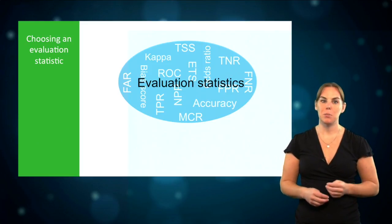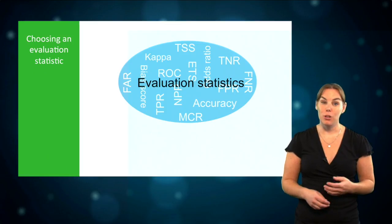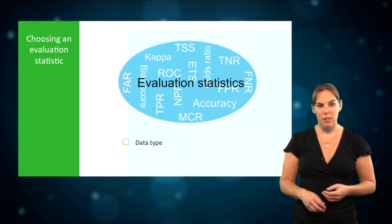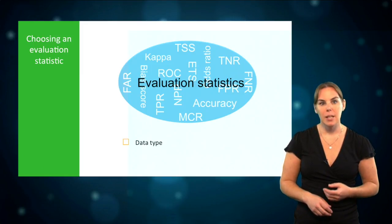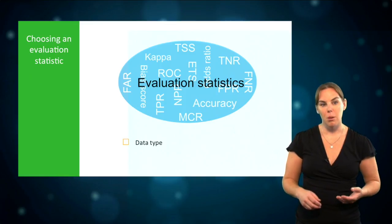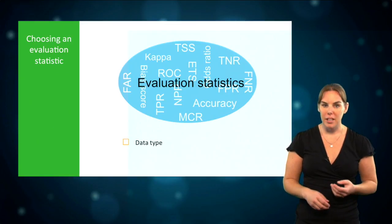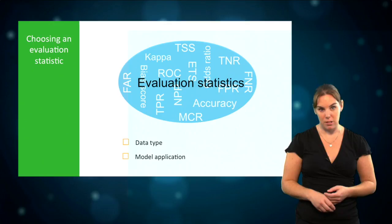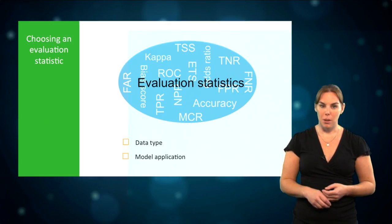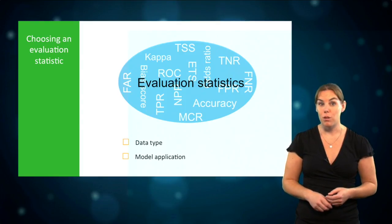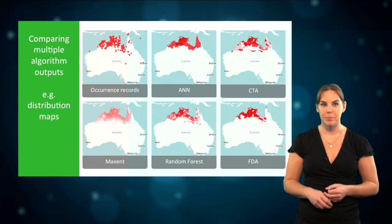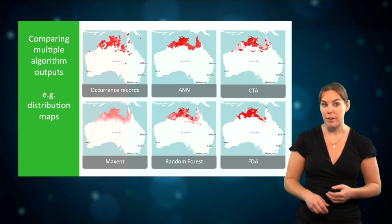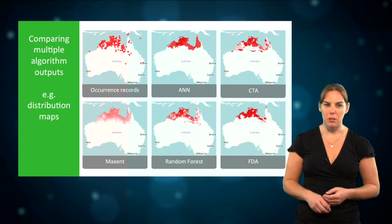Like with all aspects of species distribution models, the selection of evaluation statistics depends on various factors. The statistics available depend on the type of data used — some statistics need both presence and absence data and cannot be used with presence-only data. Another consideration is your research question and how you will apply the model outcomes, as some statistics better evaluate actual distribution while others suit potential distribution, such as for invasive species. You may also want to compare model outputs and evaluation statistics across various algorithms to determine which has performed better with your data.